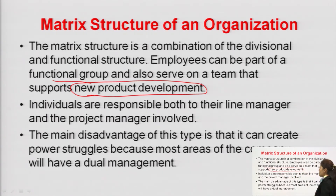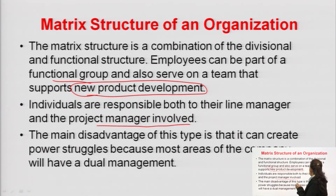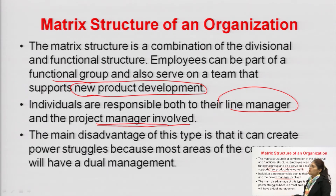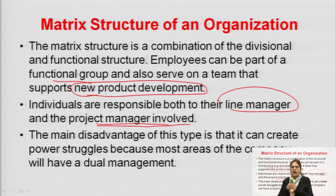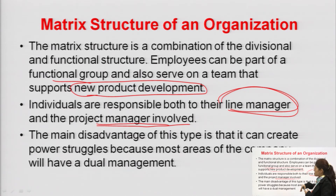In matrix structure, individuals are responsible both to their line manager and the project manager involved. One person can have two bosses because they have to work with both the functional group and a separate project. So the employee has to report to the particular project manager as well. This is a disadvantage — there is no unity of command, meaning one person has two bosses at one time. However, it is complicated only for the short term; once the project is over, that individual reports to only one immediate boss.